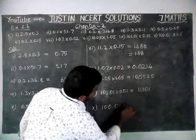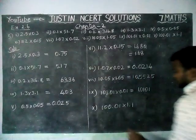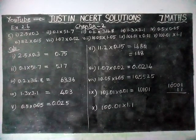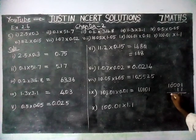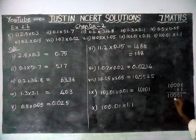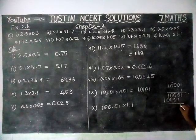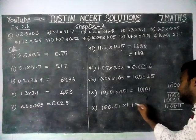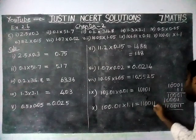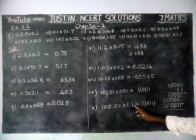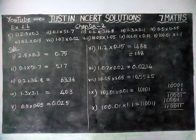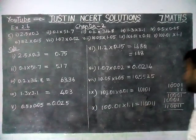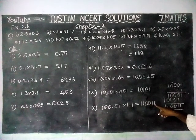10th question: 100.01 into 1.1. We multiply by 11. Same answer: 1, 0, 0, 0, 1. And when multiplying this again: 1, 0, 0, 0, 1. So we get 1, 1, 0, 0, 1, 1. Now we have to consider the total number of decimal places: 1, 2, 3 — totally 3 decimal places. So from the right hand side: 1, 2, 3. The answer is 110.011 for the 10th question.